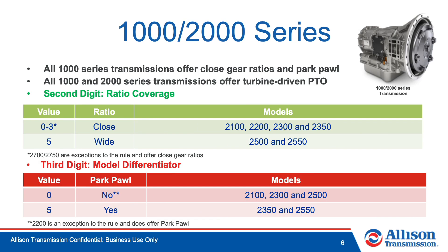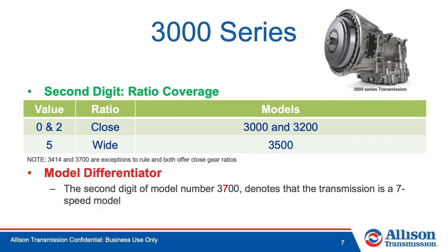All 1000 series transmissions offer close gear ratios, park pawl, and turbine-driven PTO. The 2000 series transmissions also offer turbine-driven PTO and follow the general rules about ratio coverage, with a few exceptions. The 3000 series transmissions follow the rule of 0 and 2 as the second digits indicating close ratio and a 5 indicating wide ratio, with some exceptions. The 7 in the 3700 denotes that the transmission is a 7-speed model.